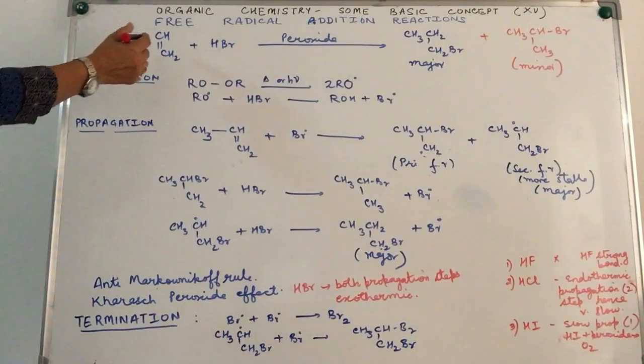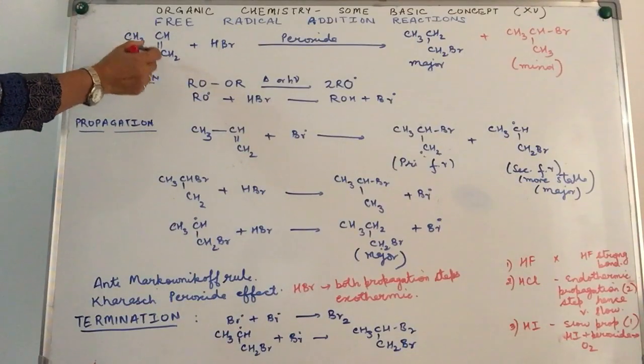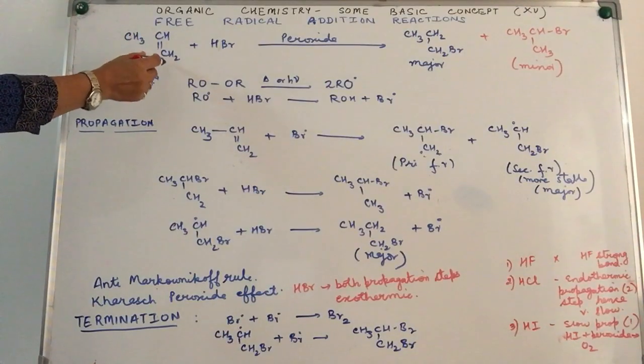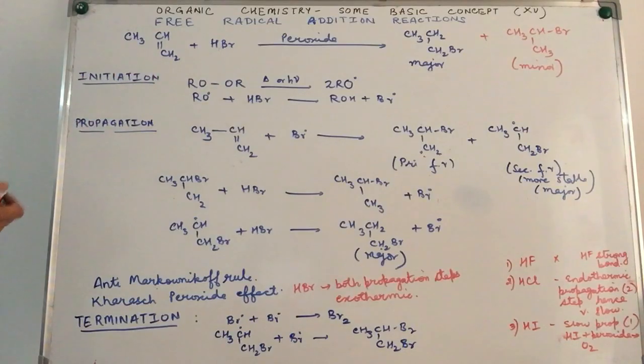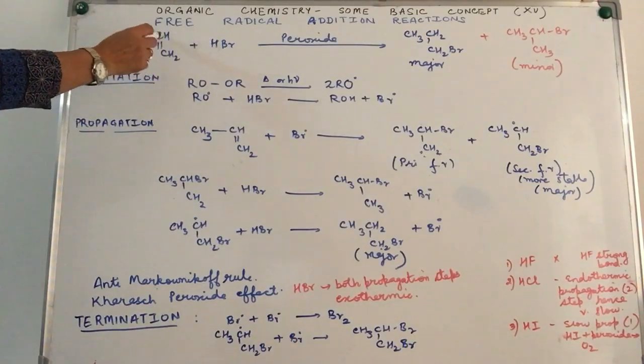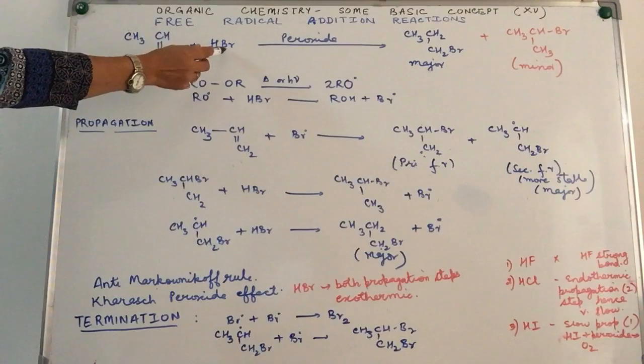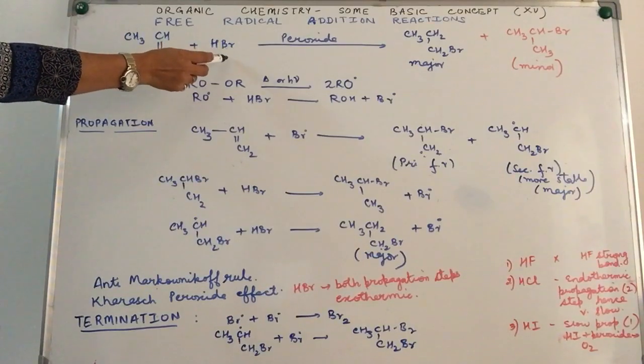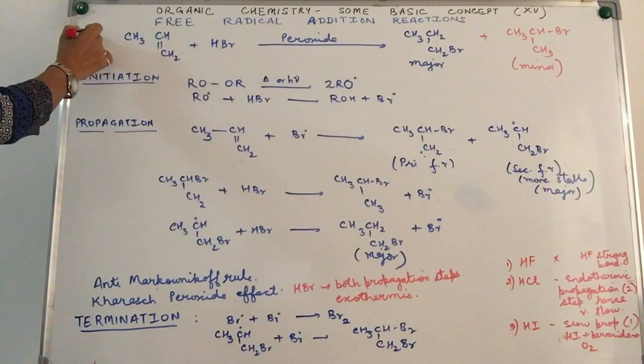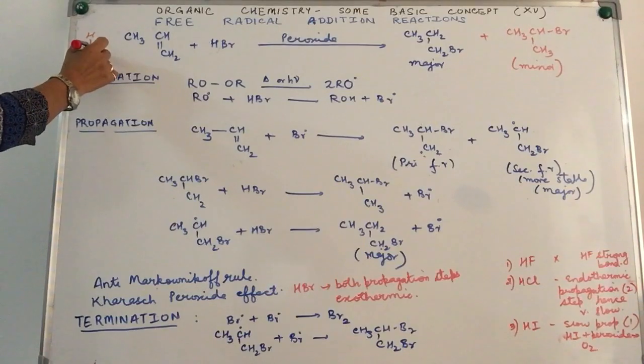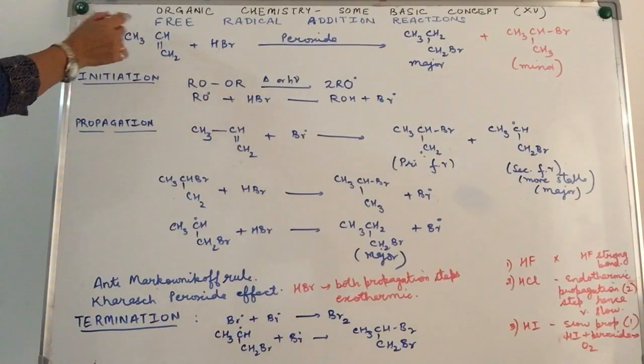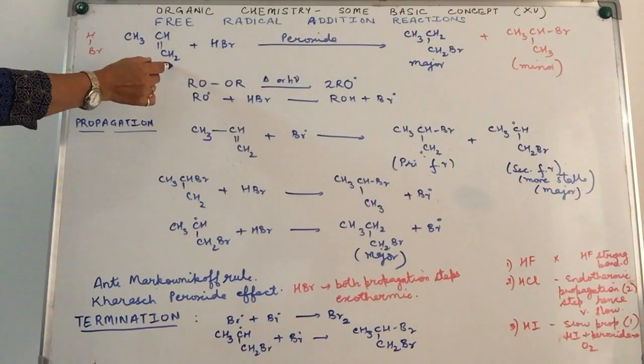If you notice over here, what we are going to do is CH3-CH double bond CH2. It's an unsaturated compound. Across the double bonds we shall be adding a simple molecule, hydrogen bromide, so HBr. Hydrogen can add across to CH or to CH2.